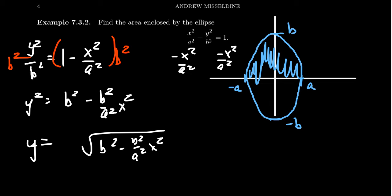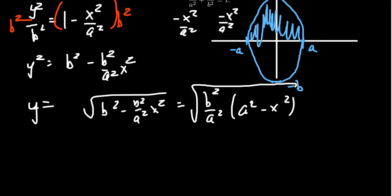To make this cleaner, I'm going to factor out b squared over a squared inside the square root. That leaves behind a squared minus x squared inside the square root. The advantage is b squared and a squared are perfect squares, so we can simplify and take y equals b over a times the square root of a squared minus x squared.